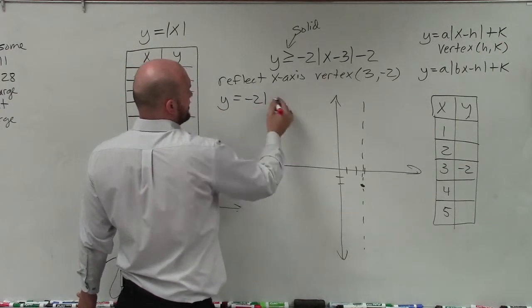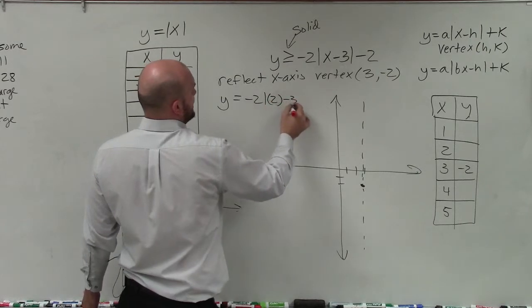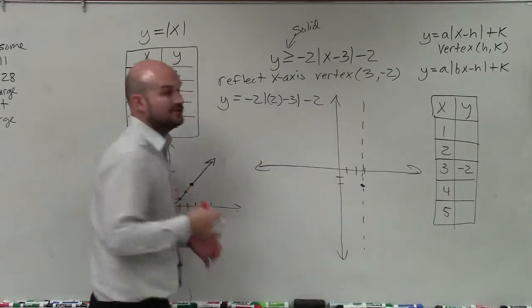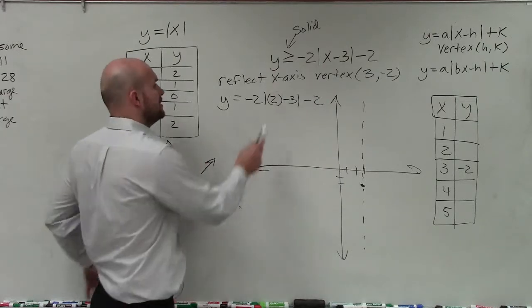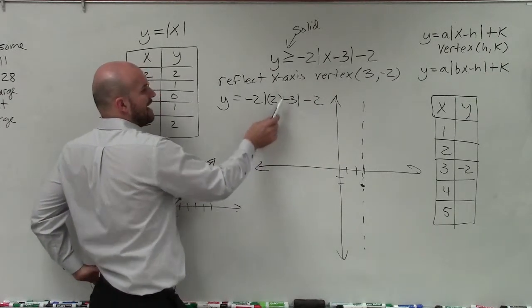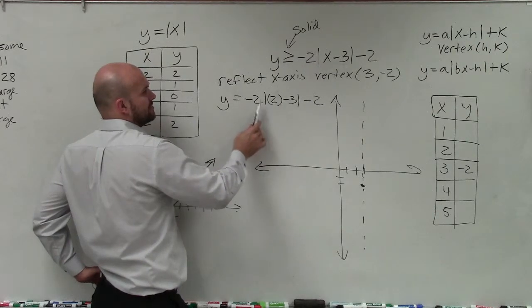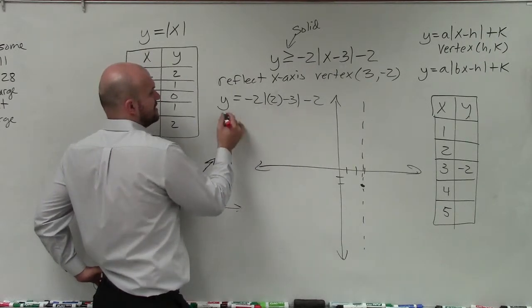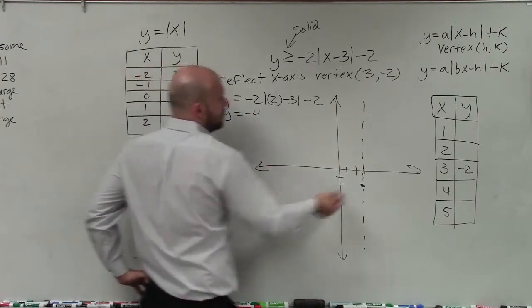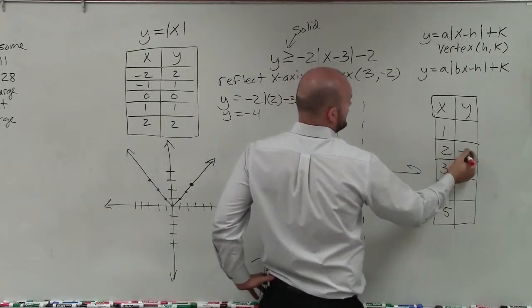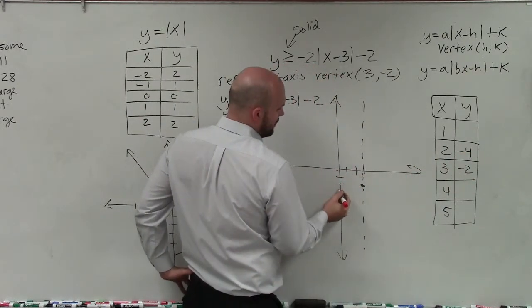So instead of 3, I'm going to plug in 2 minus 3 minus 2. Now, to make this go a little bit quicker, I'm going to kind of do this in my head, but I'll talk my way through it. 2 minus 3 is negative 1. Absolute value of negative 1 is 1. 1 times negative 2 is negative 2. Negative 2 minus 2 is negative 4. So when x equals 2, y equals negative 4. So I go over 2, down 4.